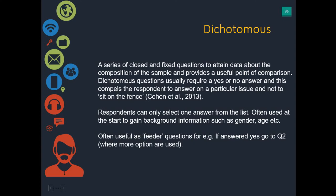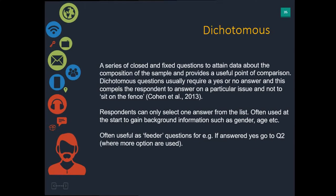A dichotomous question doesn't always have to be yes or no — it can also be categories, such as gender, age, or income. The important thing is that the respondent can only select one answer from that list, making it an excellent tool for analysis across a whole data set. They also serve a purpose in questionnaire design as feeder questions. For example, if answered yes, go to question two where more options will be used, because you don't really know the meanings behind a yes or no answer alone.